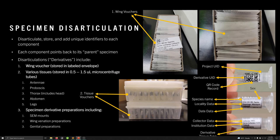Then specimen disarticulation begins. The steps are generally to disarticulate, store the specimen, and add unique identifiers to each component. Critically, each component should point back to its parent specimen. Here's an example of a wing voucher where all the label data is retranscribed onto a label added to a glassine envelope. The wing voucher itself has a unique identifier and the project unique identifier, so it can be tied directly back to all the data and images for that specimen.